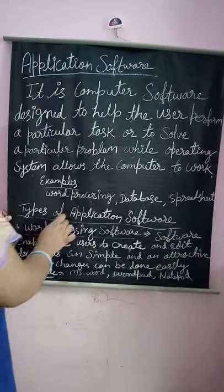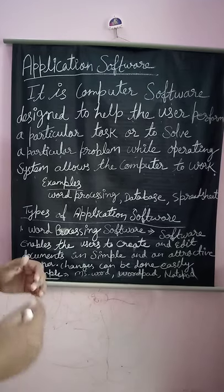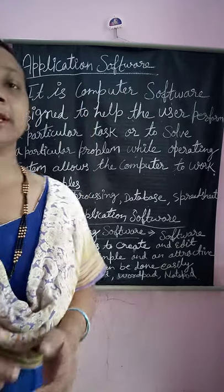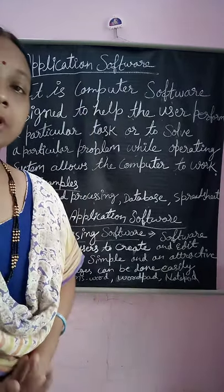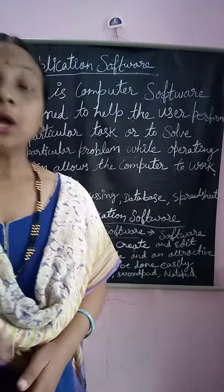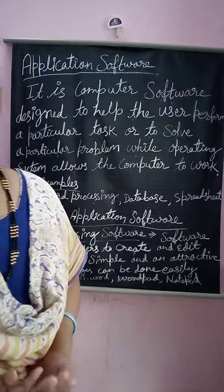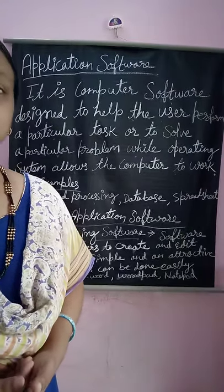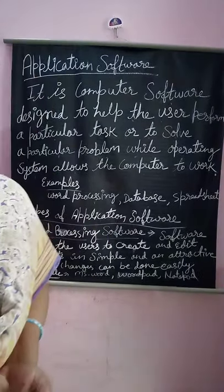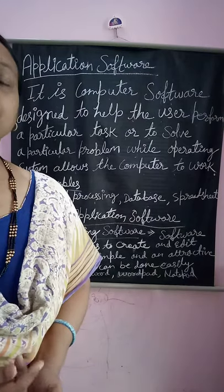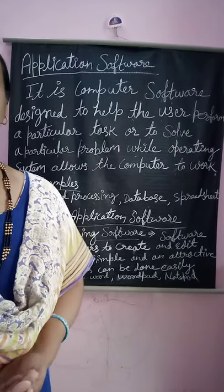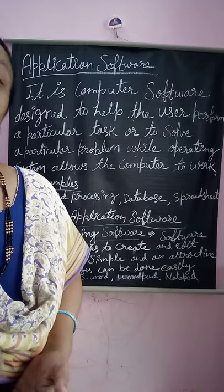Next, let's look at the types of application software. Application software is classified according to their function — which type of application deals with which type of data. As already explained, if the application software deals with word processing, that application software is of the type word processor.